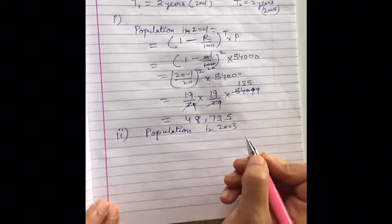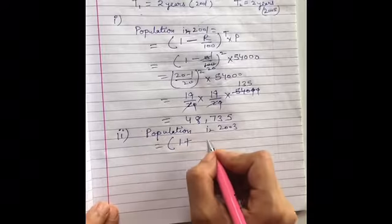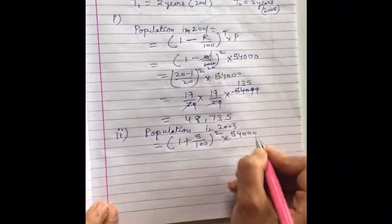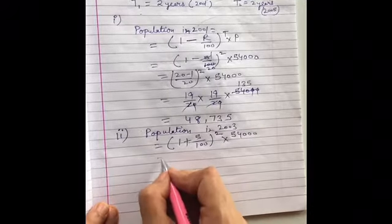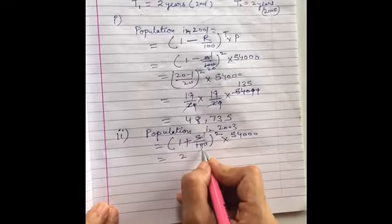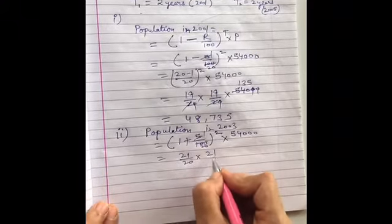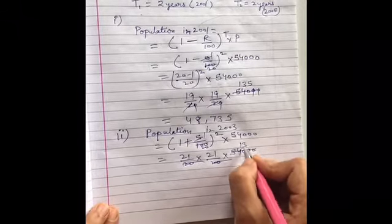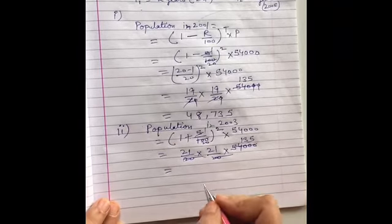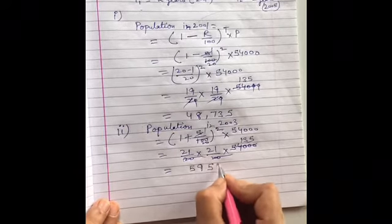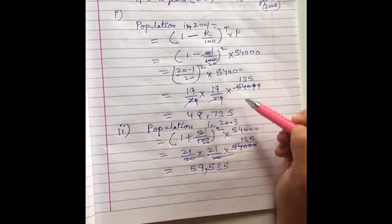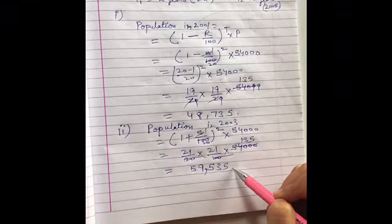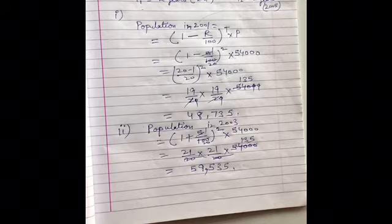Now you have to find out the population in 2005. So it will be (1 + r/100) raised to power 2 multiplied by 54,000, because it will increase. Again it will be the same, (1 + 20)/20, 21/20 multiplied by 21/20 multiplied by 54,000. You will reduce it, you will get the same 135 here. So the final answer will be 59,535. In 2001, population was 48,735, and in 2005 it will be 59,535.